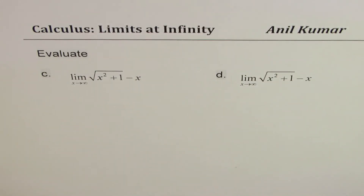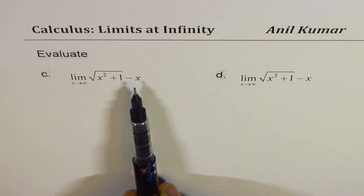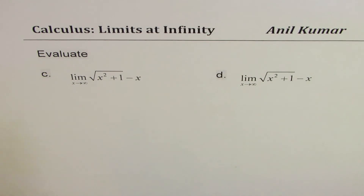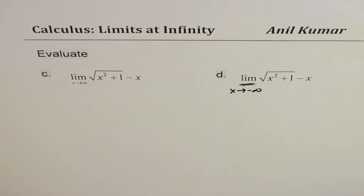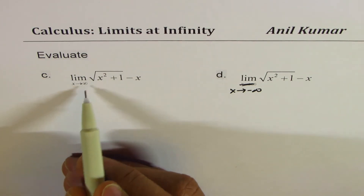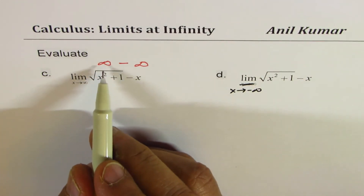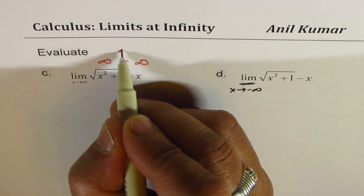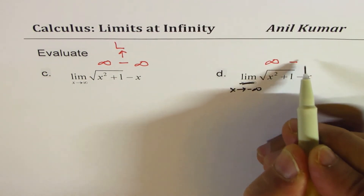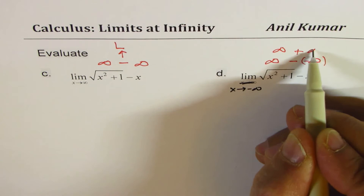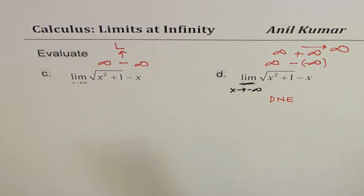Now let's take up the next two questions. We have square root of x squared plus 1 minus x, checking the limit as x approaches positive infinity on one side and x approaches minus infinity on the other. For positive infinity, we get a very large positive value minus a very large value — so a value could exist. But for negative infinity, we get infinity plus infinity, which is definitely infinitely large, so the limit does not exist.